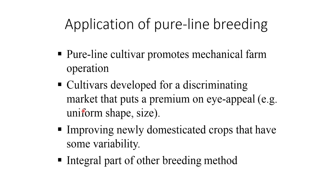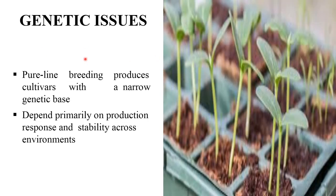Applications of pure line breeding: it promotes mechanical farm operations; cultivars developed for discriminating markets put a premium on eye appeal — for example, uniform shape and size; it improves newly domesticated crops that have some variability; and it is an integral part of other breeding methods. Pure line breeding produces cultivars with a narrow genetic basis, depending primarily on production response and stability across environments. Pure line selection is a procedure for isolating pure lines from a mixture or mixed population.